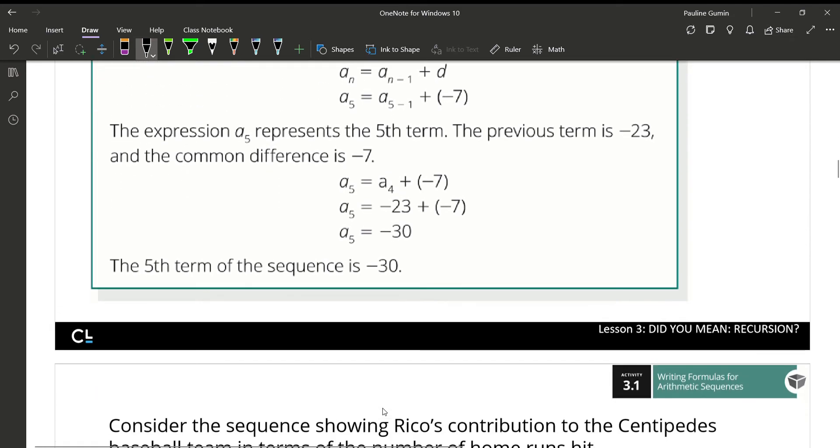We're going to use this word problem that we had about Rico. Where's Rico's word problem? Rico is contributing to the centipedes baseball team based on the number of home run hits. So, we want to find the 35th home run, or how much money Rico will contribute after 35 home runs. So, let's check it out.